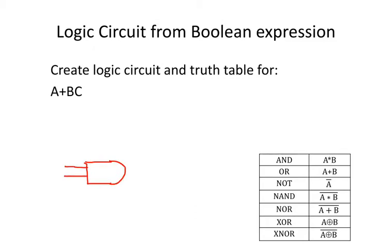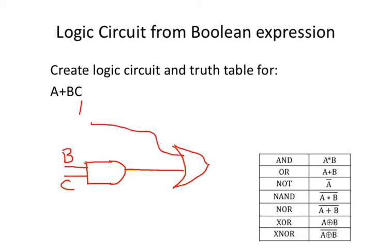And on that AND I've got the two things, the two inputs. In this Boolean expression it was B and C. My Boolean expression said that A was ORed with B and C. So I'm going to write that out. I've got the output of B and C going into an OR gate. And what's getting ORed with that is an A. So the output of this is the A ORed with B and C.